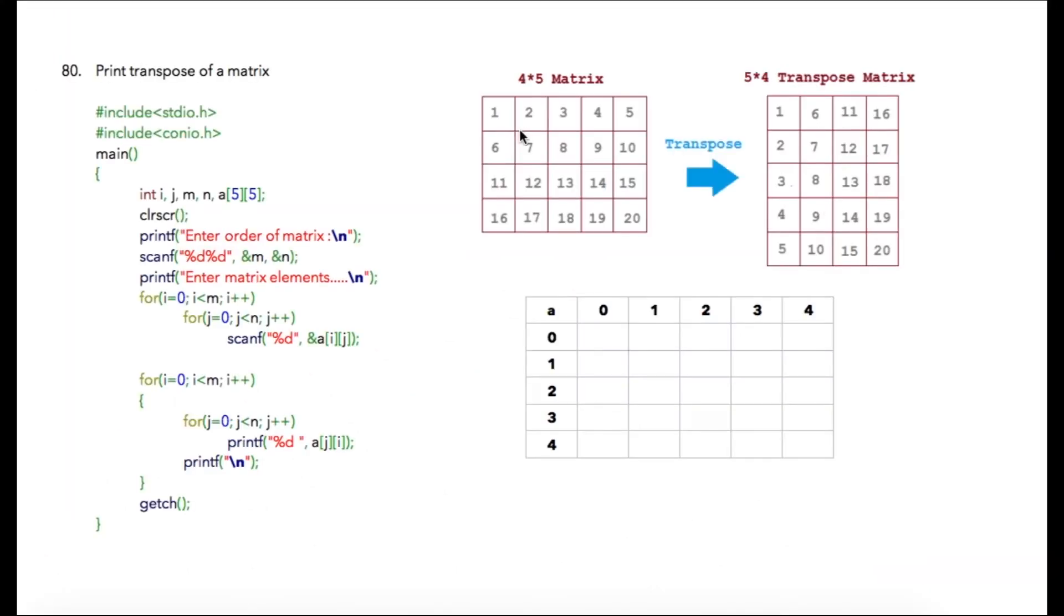In this lecture we are going to print transpose of a given matrix, but before we start writing the program, let us understand what transpose of a matrix is. Suppose we have a matrix given of size 4 by 5, then 4 are my rows and 5 are my columns. We just need to replace all the columns with rows.